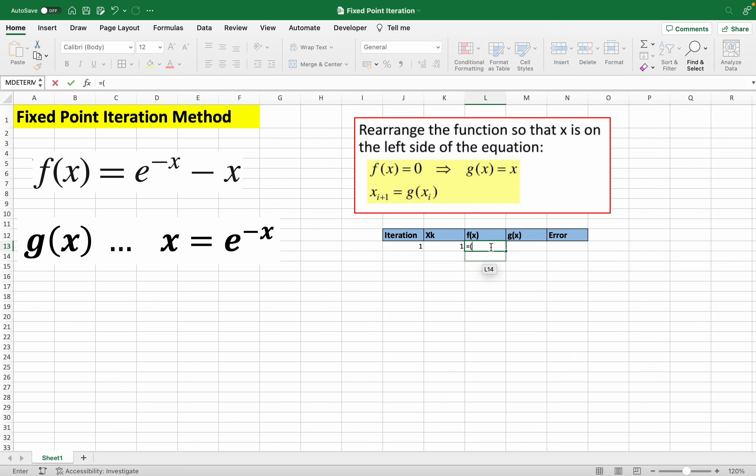So it's going to be like this: exponent, because in Excel, e is exponent. Then negative x, so negative. And here, this is our x minus our x. That's for our f(x).